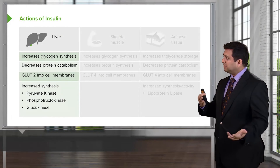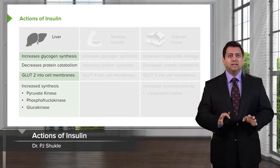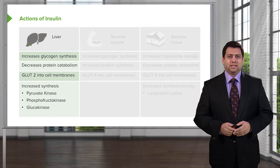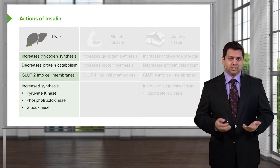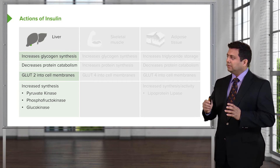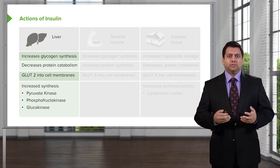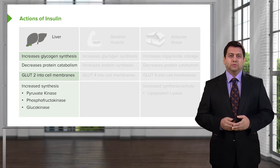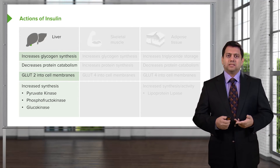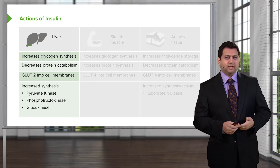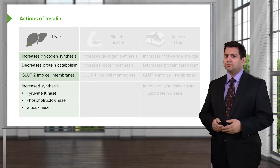So let's talk about insulin and how it works in the body. In the liver, it increases glycogen synthesis and decreases protein catabolism. It uses a porter called GLUT2 to move sugar into cell membranes. There is increased synthesis using pyruvate kinase, phosphofructokinase, and glucokinase.